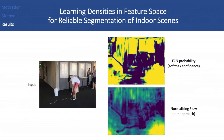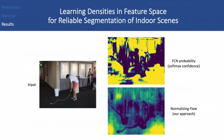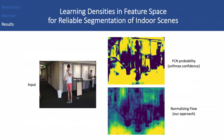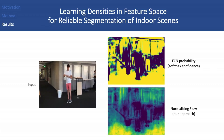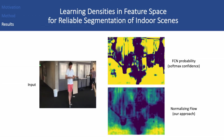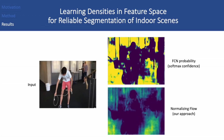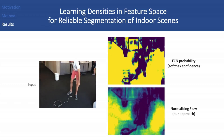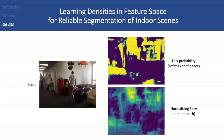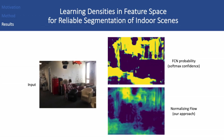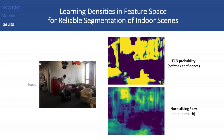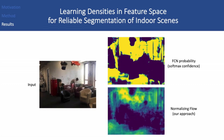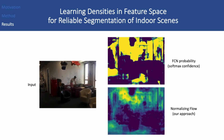In the upcoming videos, you will see how the FCN probability completely changes from one frame to another. Notice how the floor changes from background to foreground with the FCN probability.